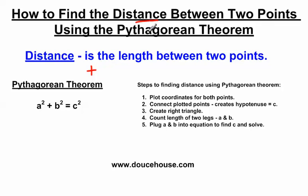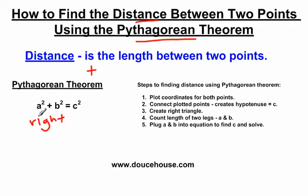This is finding the distance between two points using the Pythagorean Theorem. The Pythagorean Theorem is a² + b² = c². Hopefully you're a little familiar with it — it will make these problems a little bit easier. Remember, we can only use the Pythagorean Theorem if we have a right triangle. We're going to plot the two points on a graph, make a right triangle, and then plug values into the Pythagorean Theorem to solve.